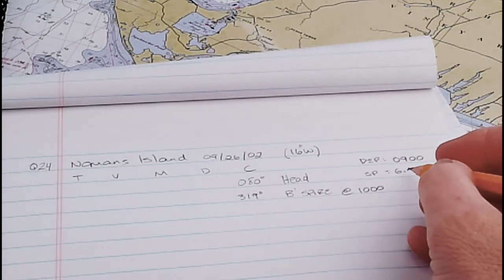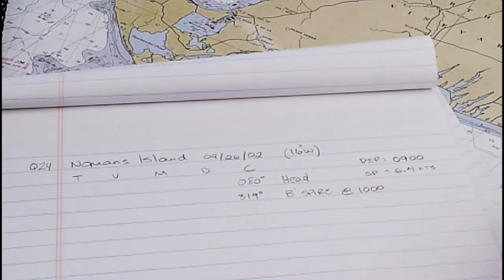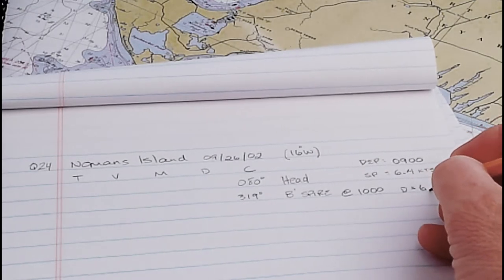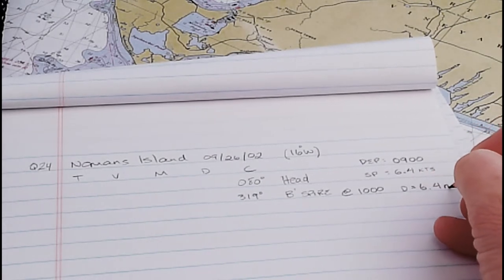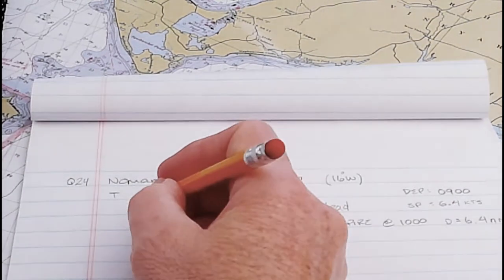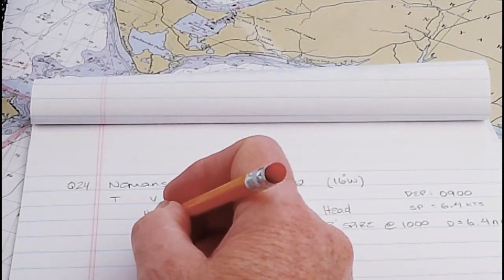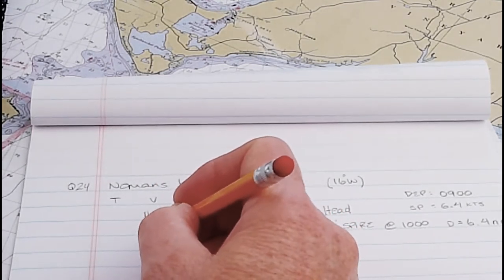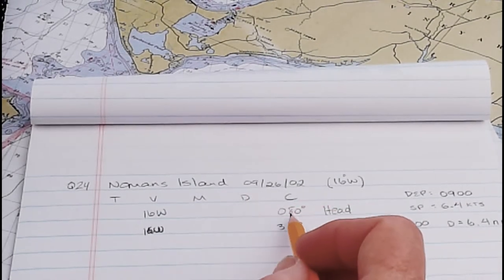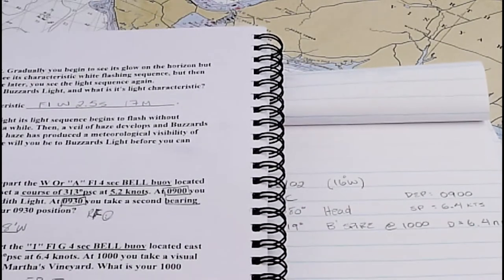And so over one hour, between 9 and 10, we actually traveled, at least in our dead reckoning, 6.4 nautical miles. So let's fill in the 16 magnetic variation here.